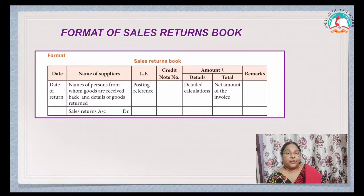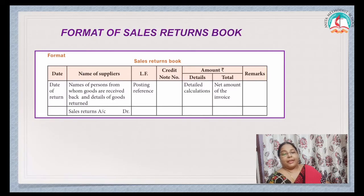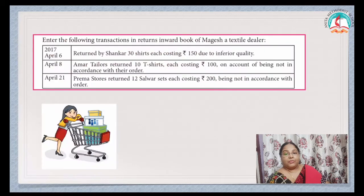This is the format of your Sales Returns Book. Date, name of the supplier, then LF, Credit Note number — here it is not Invoice Number, it is Credit Note — Amount and Amount.